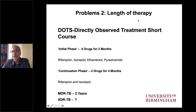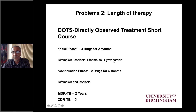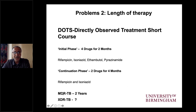The second issue is the length of therapy. WHO coined DOTS — Directly Observed Treatment Short Course — with an initial phase of four drugs for two months: rifampicin, isoniazid, ethambutol, and pyrazinamide, followed by a continuation phase of rifampicin and isoniazid for four months. Total duration is six to nine months for drug-sensitive tuberculosis. Multi-drug resistant tuberculosis, involving resistance to these frontline agents, requires a continuation of therapy for two years.